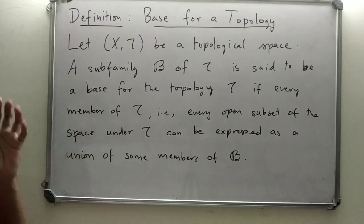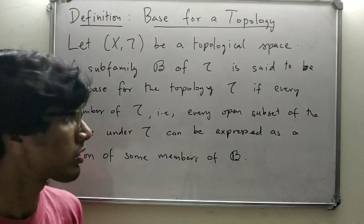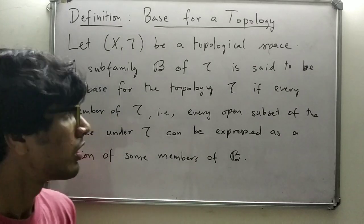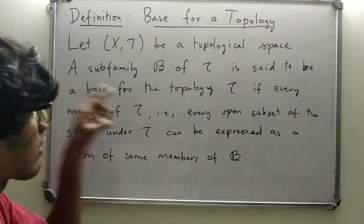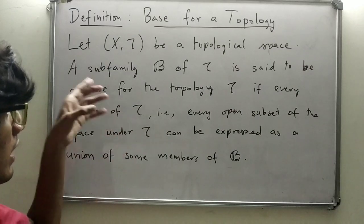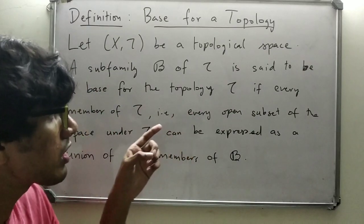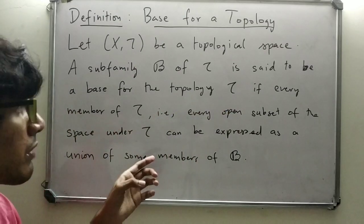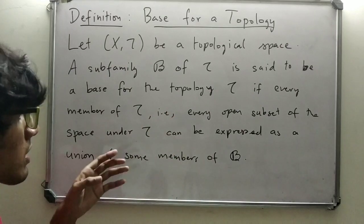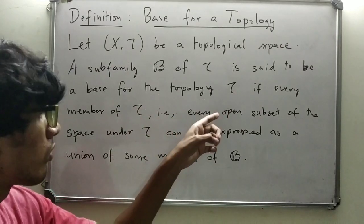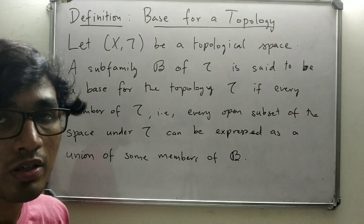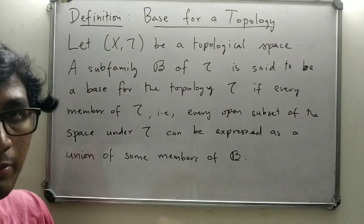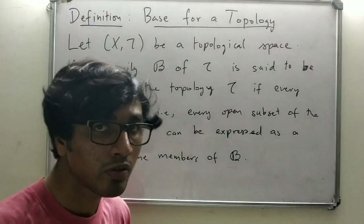So a subfamily B of τ — and we know that a topology is actually a family of subsets of X — we take a subfamily of that family, and that subfamily is said to be a base for that topology when every open subset of the space under the topology τ can be expressed as a union of some members of that subfamily. I hope that's clear.